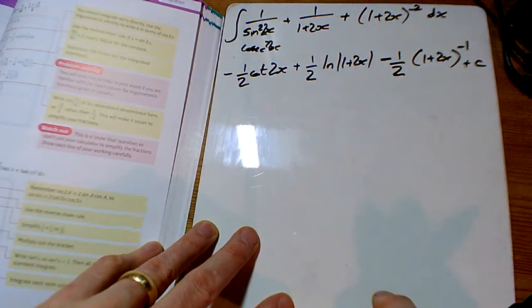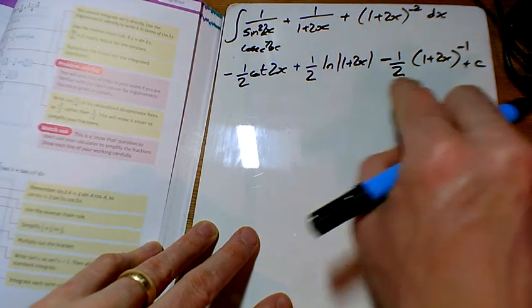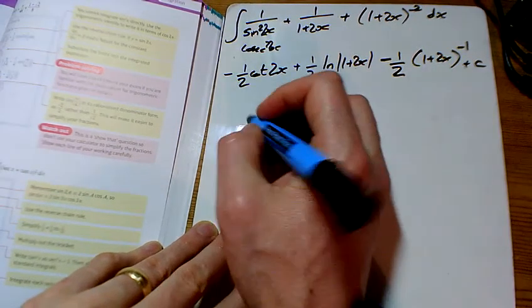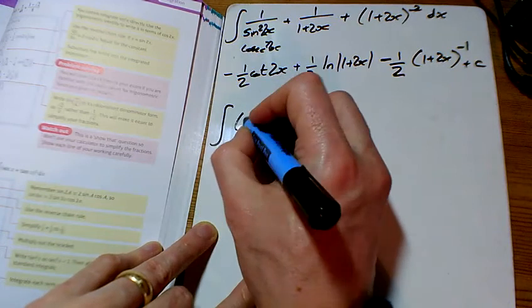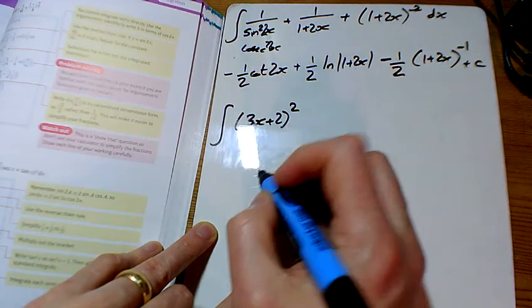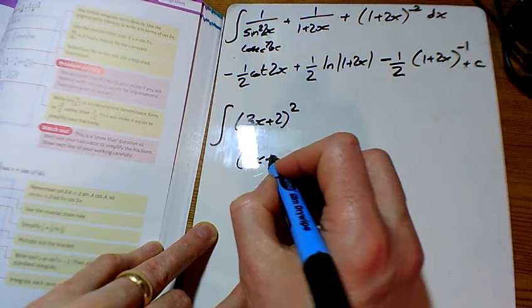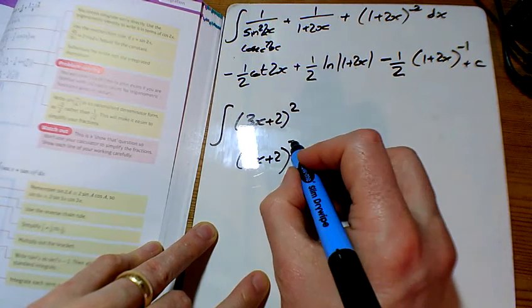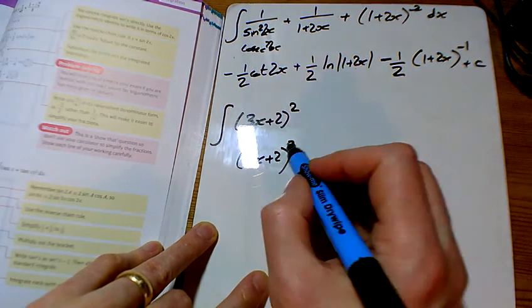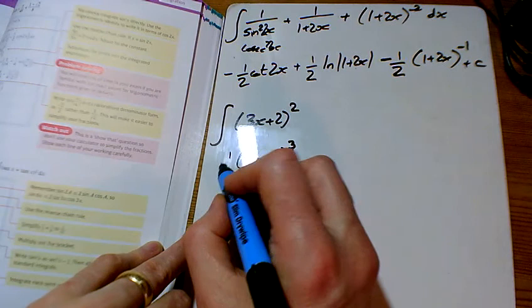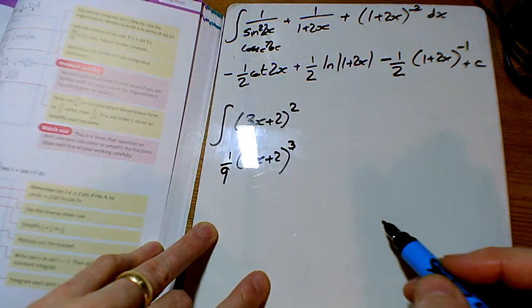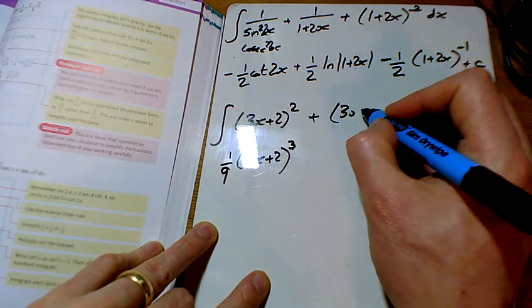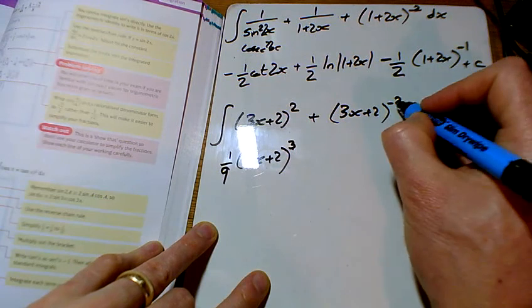And d, so d we've got 3x plus 2 all squared. The 3x plus 2 stays the same, power goes up by 1 to 3, divided by the 3 and the number of x's, so we'll divide by 9 total. And the other part of it is 3x plus 2 all to the power of minus 2.